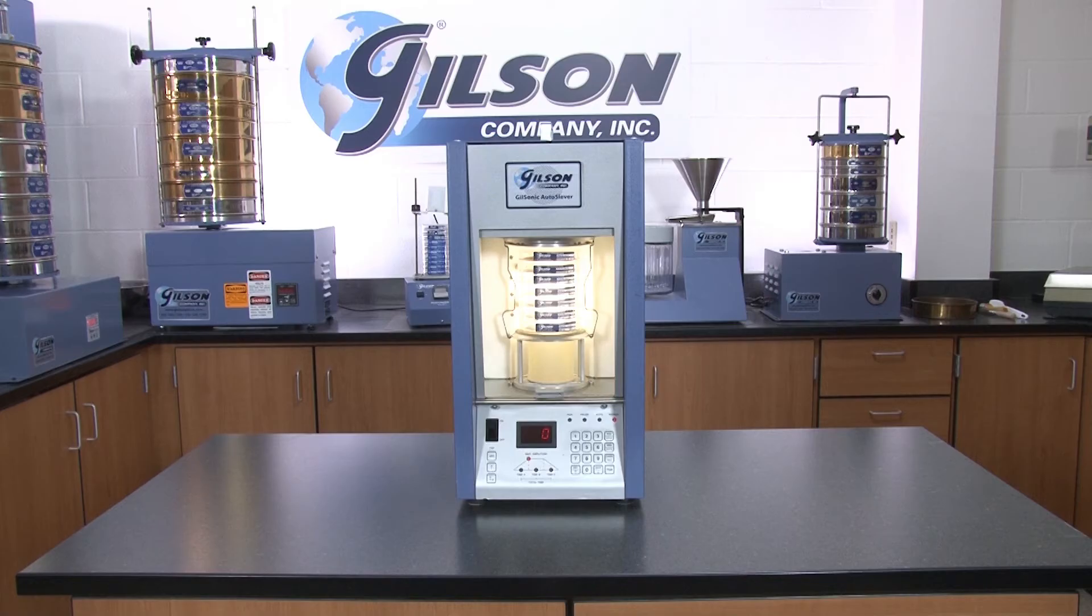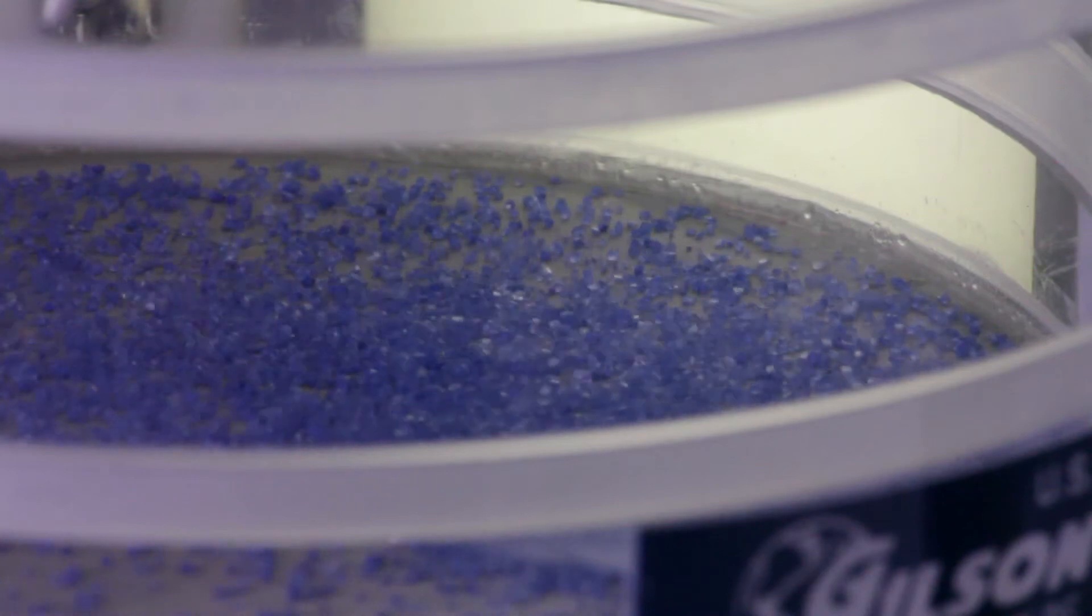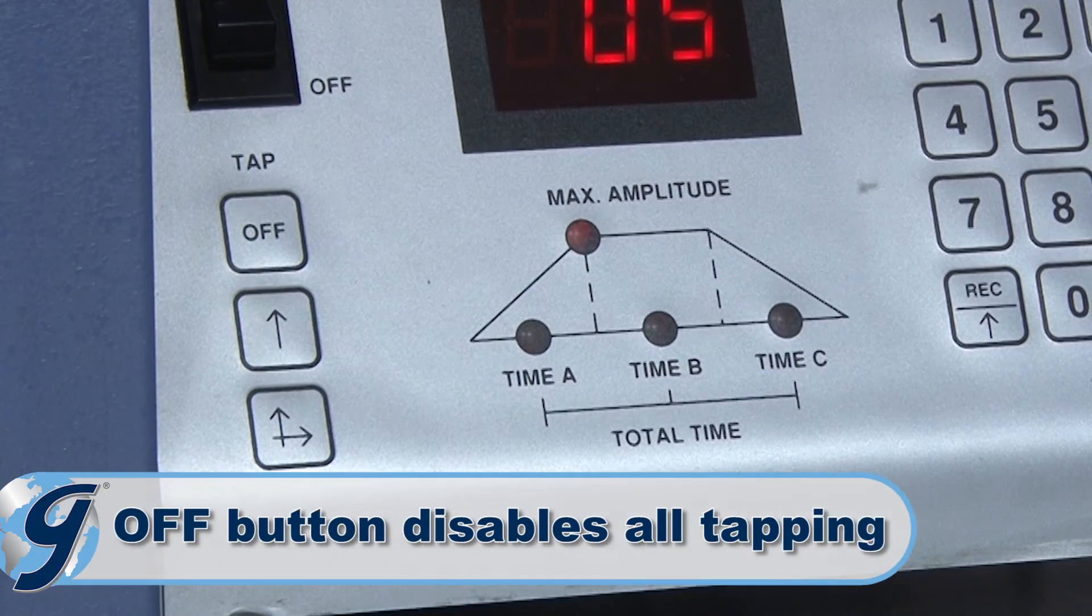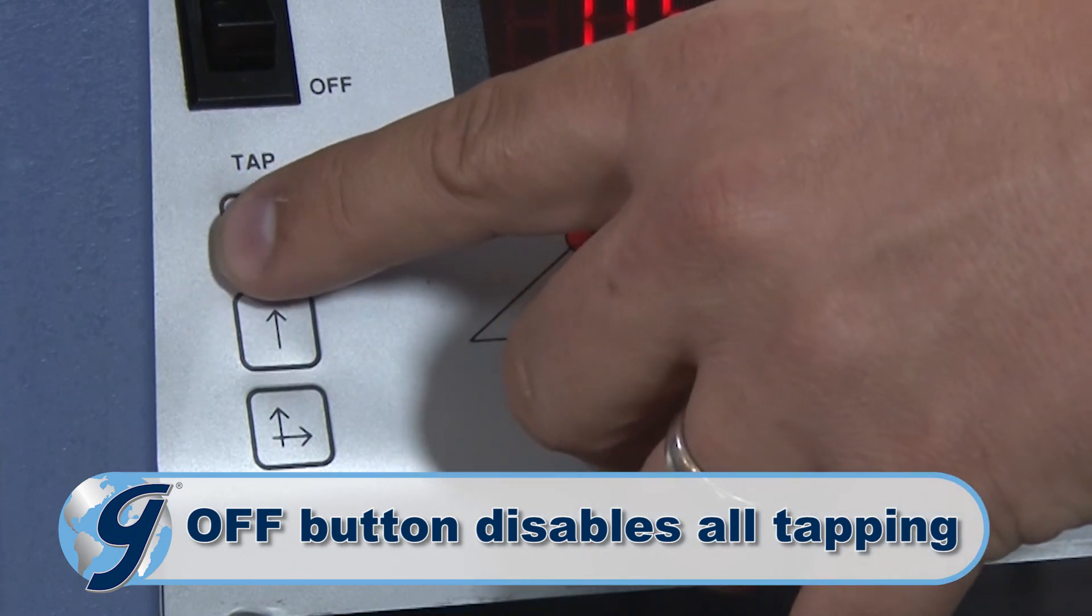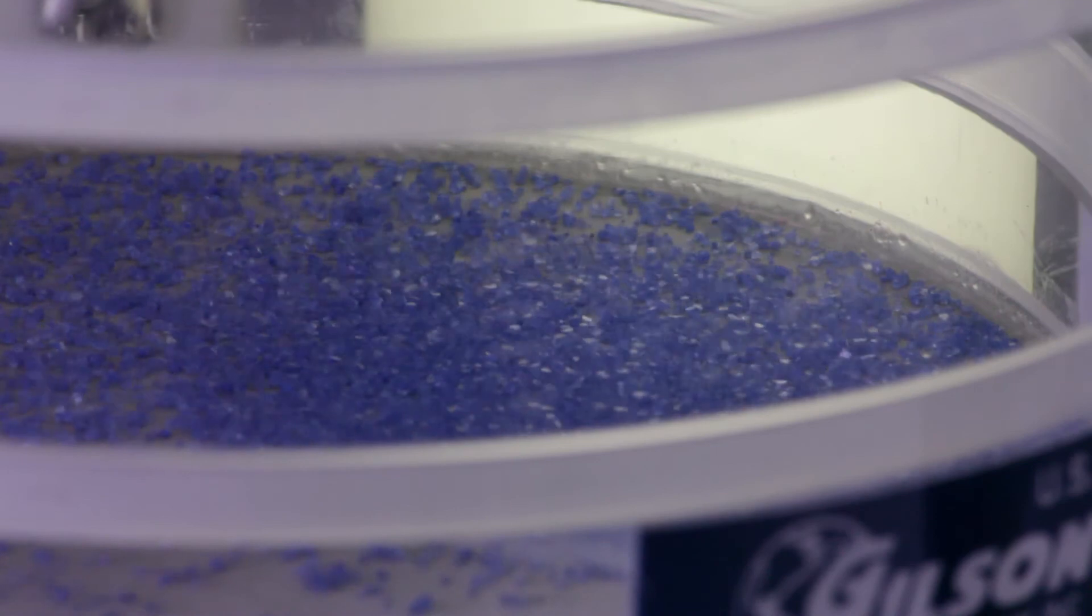The Gilsonic Auto Siever also has horizontal and vertical tapping actions that free lodged or near-sized particles from binding the mesh openings. The Off button disables all tapping. Pressing this button will make the sieving action of the unit solely dependent on sonic energy.